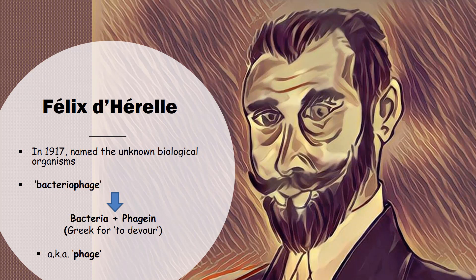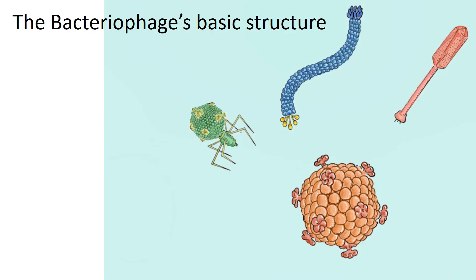At this point, the world would have to wait 22 years in order to see the first images of bacteriophage using the newly invented electron microscope. Today, more than 5,000 different types of bacteriophages have been identified, with only a fraction of these being extensively studied.